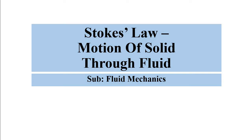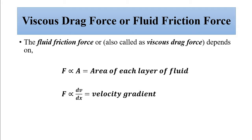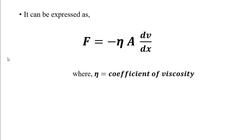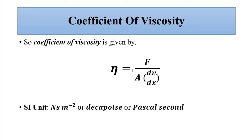Viscosity comes into play when there is a relative motion of fluid layers that are one above the other. This fluid friction force is directly proportional to the velocity gradient — that is, the difference in velocity between any two layers and the separation between them. It is given by F equals minus eta times dv by dx, where A is the area of contact between the two fluid layers.